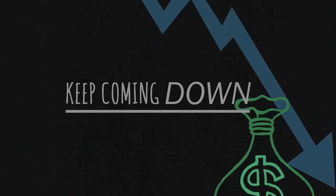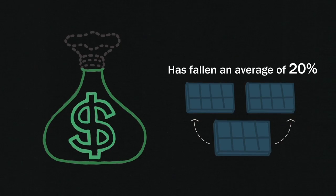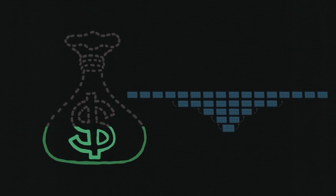Well, solar prices keep coming down. The cost of photovoltaic cells has fallen an average of 20% every time the world's manufacturing capacity for solar has doubled.